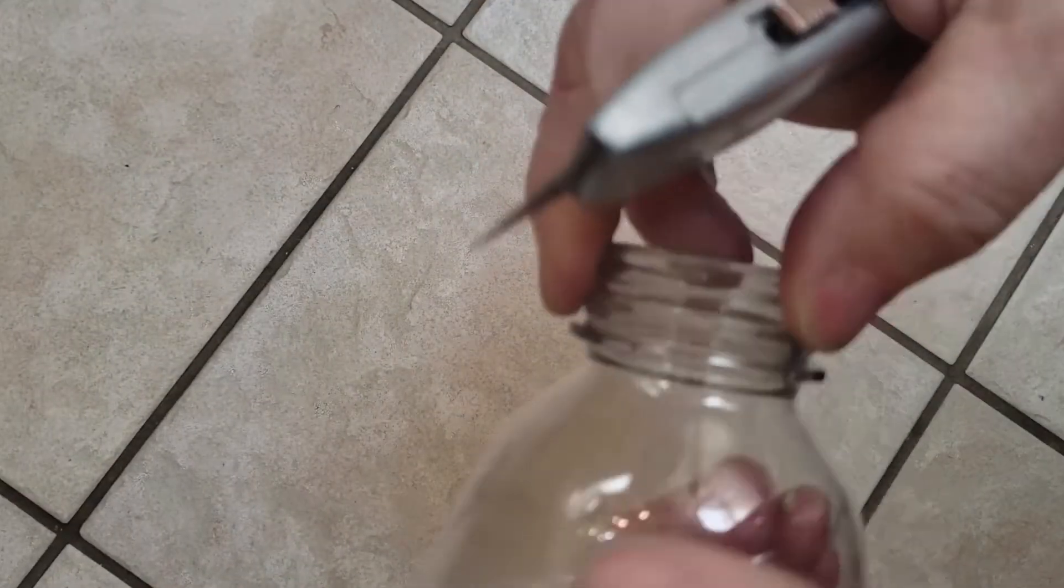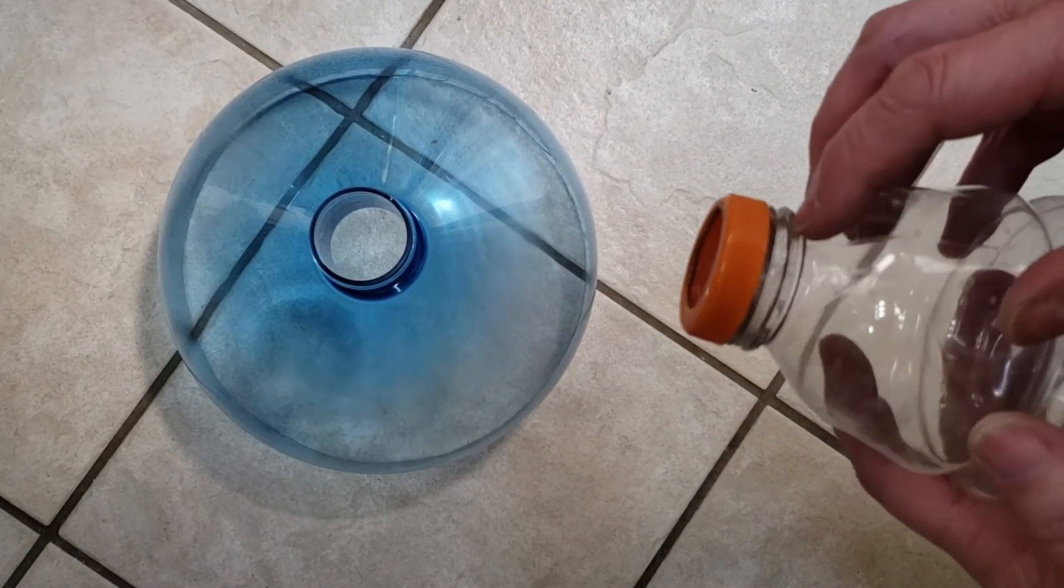You're trying to trim it back so it doesn't exceed the width of the threads or cap on the Gatorade bottle. You'll know you have it right when you can slide it into the neck of the bottle.